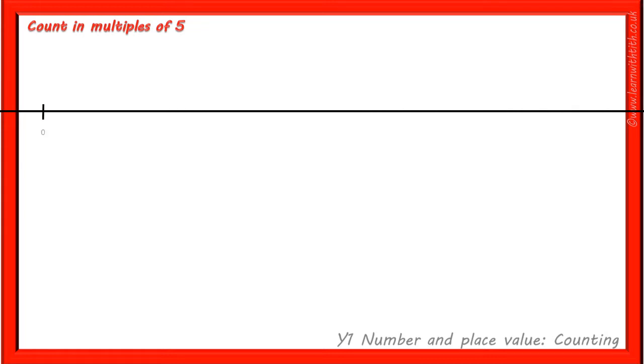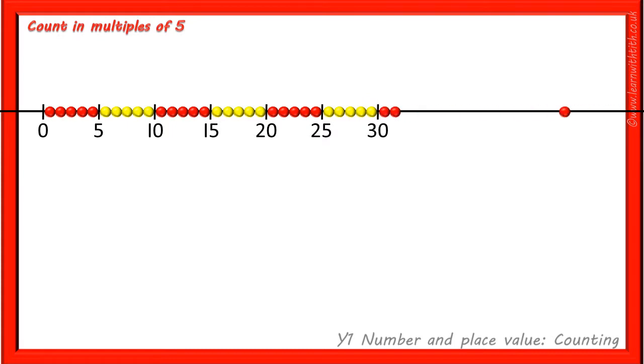We can also represent this on a bead string where we can start counting at 0. Then count every fifth number like this. 0, 5, 10, 15, 20, 25, 30, 35, 40, 45, 50.